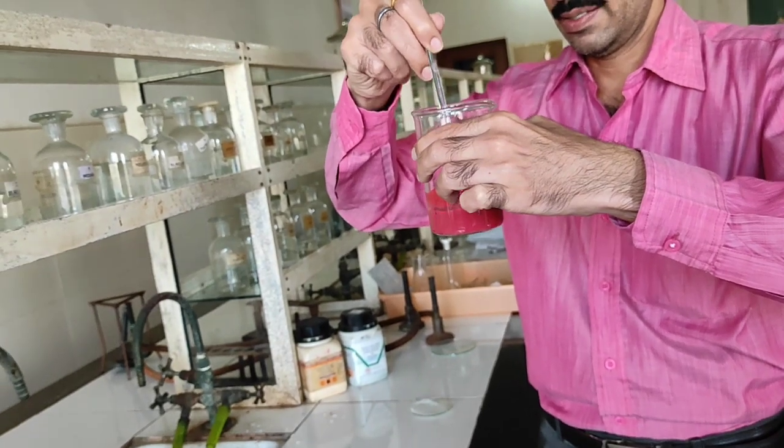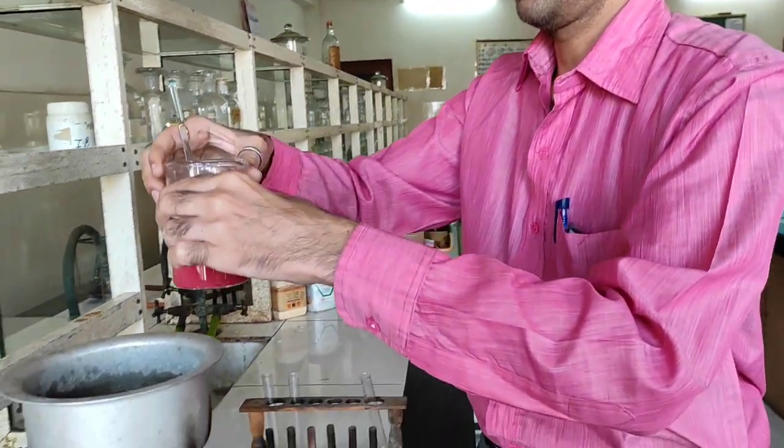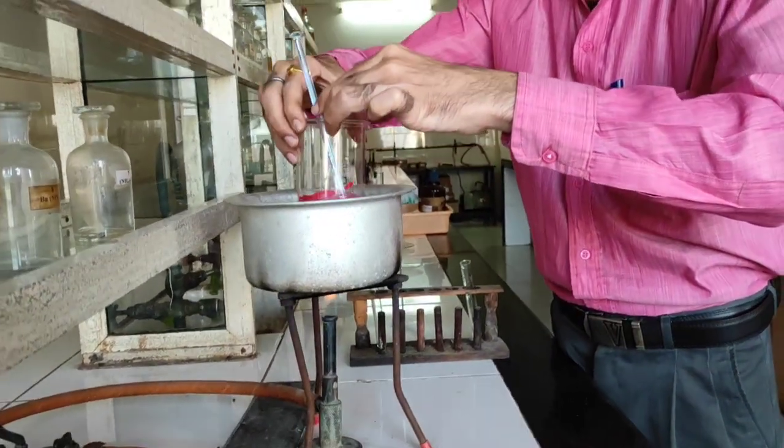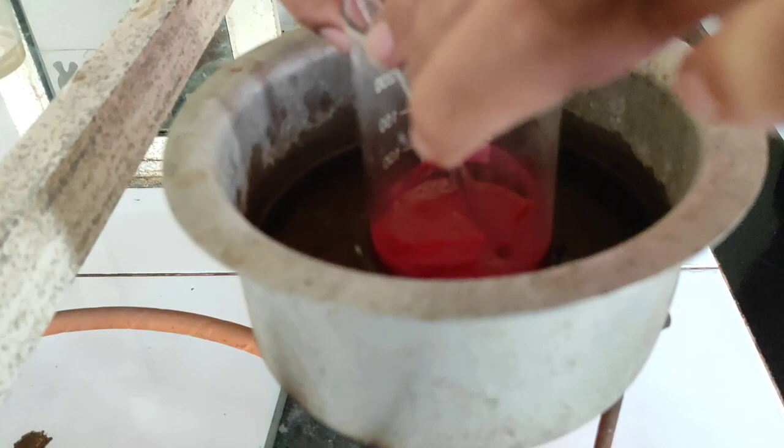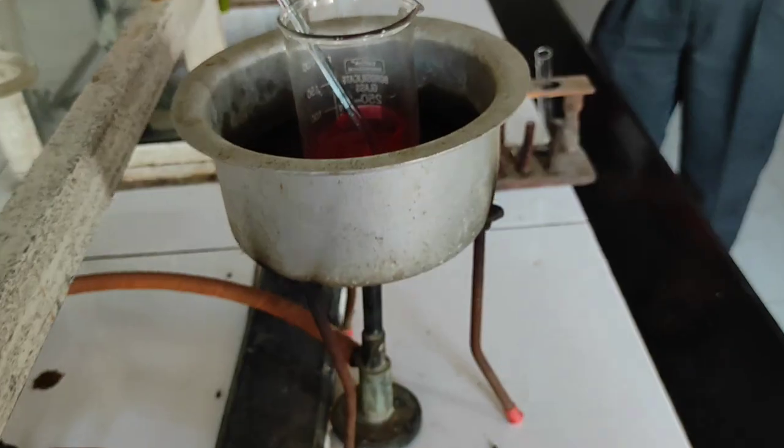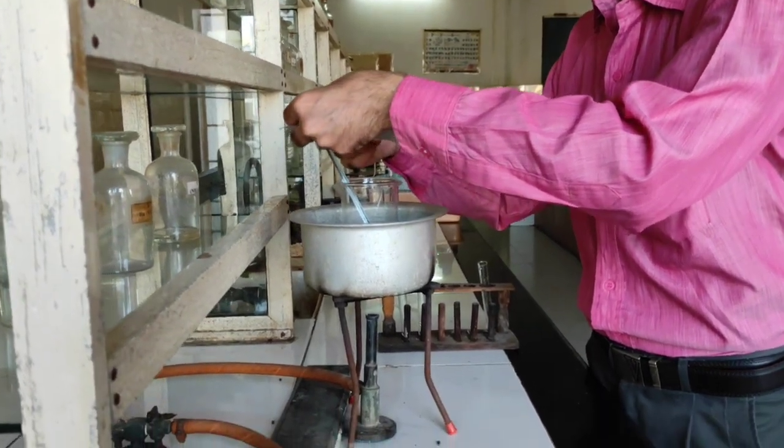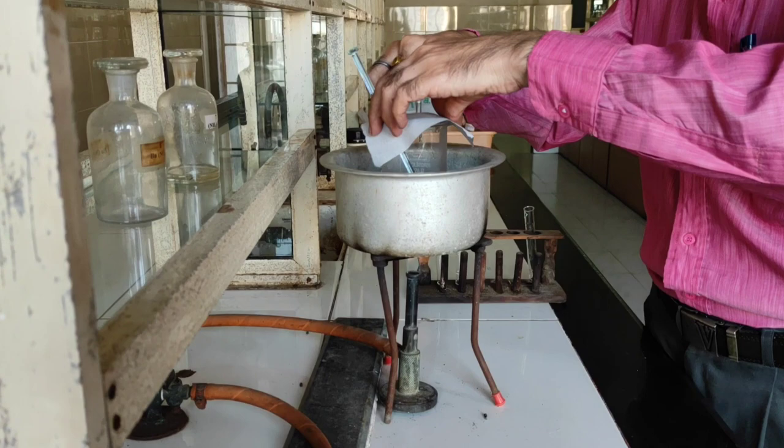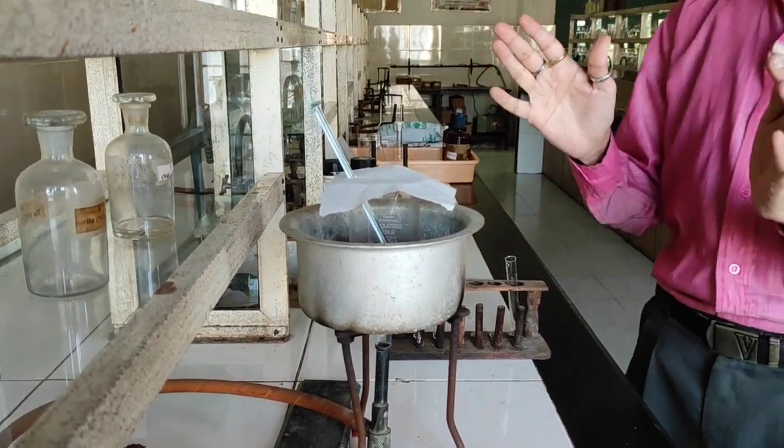Now the next process is we are proceeding for a process of digestion on a boiling water bath. So here we have the boiling water bath with a pipe clay triangle inside that so that it will hold the beaker firmly. Also we will be using a normal filter paper to ensure that no impurities can penetrate inside the beaker. This process of heating has to be carried out for 30 minutes.